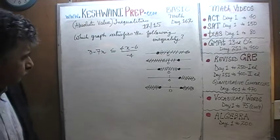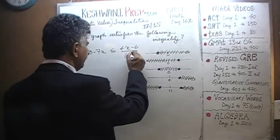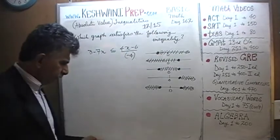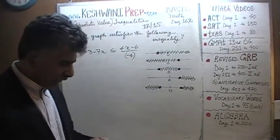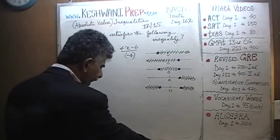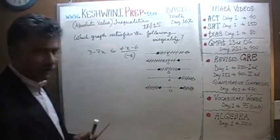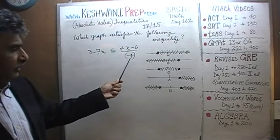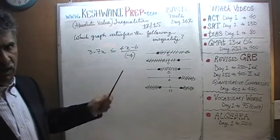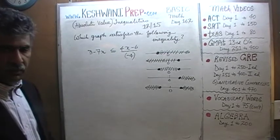All right. The very first thing we need to do here is that we see this annoying negative four at the bottom. It doesn't even have to be negative — even if it were positive, denominators are very annoying. Let's get rid of it.